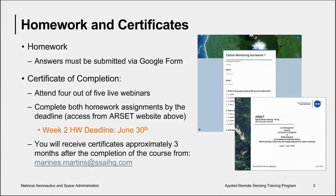We will have two homework assignments for this webinar series, which will be submitted through Google Forms. To receive credit for homework, you must submit all answers via Google Forms by the specified deadline. The deadline for Week 2 homework, which will be your first homework, is in three weeks, Thursday, June 30th. To receive a certificate of completion, you must attend four out of five live webinars and complete all the homework assignments. It takes some time to process these certificates, so you can expect to receive them about two months after the completion of the course.